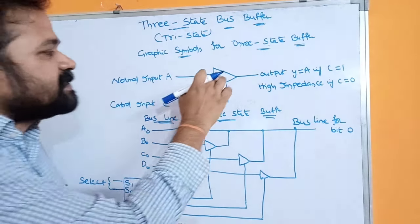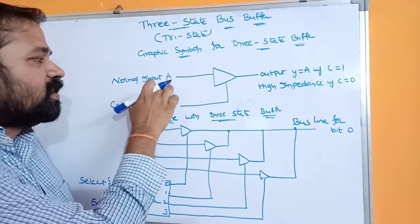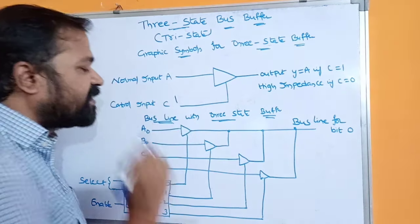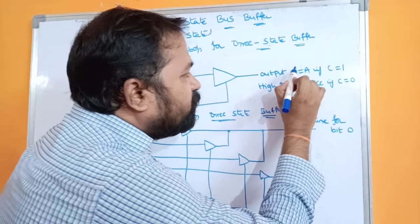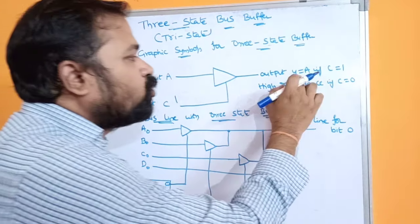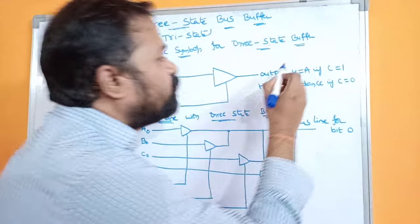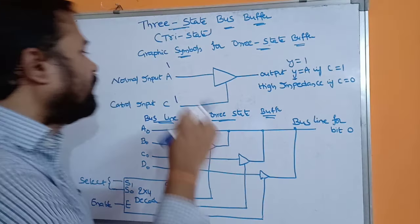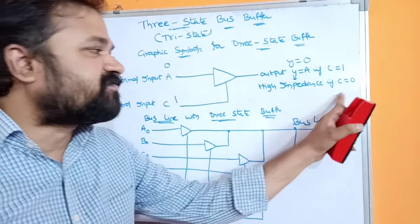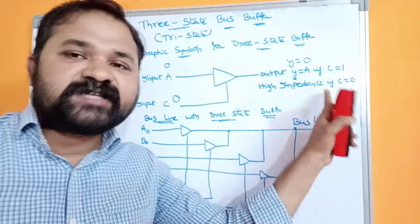This is the three-state buffer symbol. It accepts a normal input A as well as a control input C. If the control input C is 1, then the output Y equals A — so if A is 1, output Y is 1, and if A is 0, output Y is 0. If the control input is 0, then irrespective of the input it produces high impedance — meaning it doesn't produce any output.